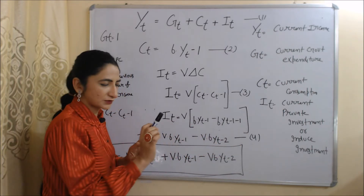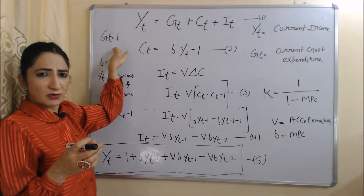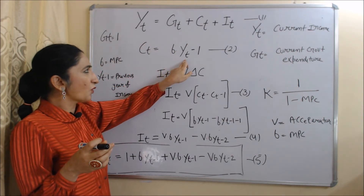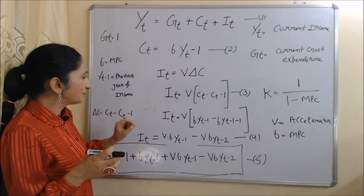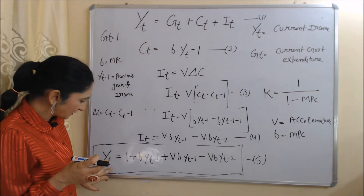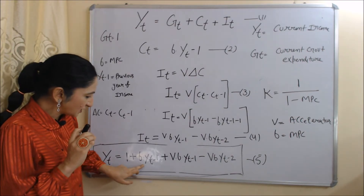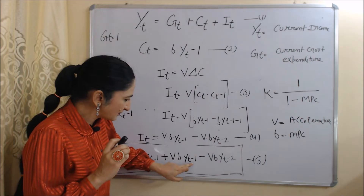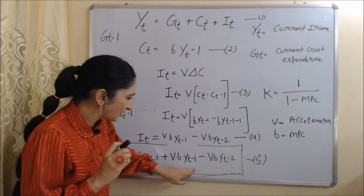This is our fourth equation. Now we have the values of all variables: Gt = 1, Ct = B × Yt-1, and It = VB(Yt-1 - Yt-2). Substituting all values into the first equation, our final equation becomes: Yt = 1 + B × Yt-1 + VB × Yt-1 - VB × Yt-2. This is the value of It.